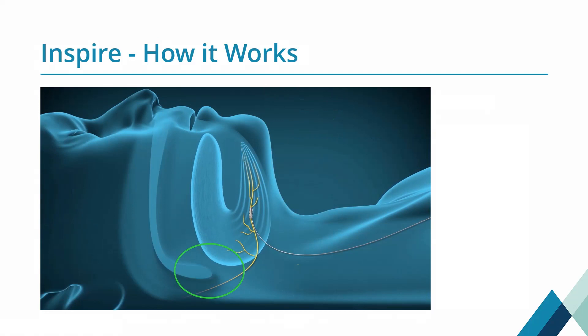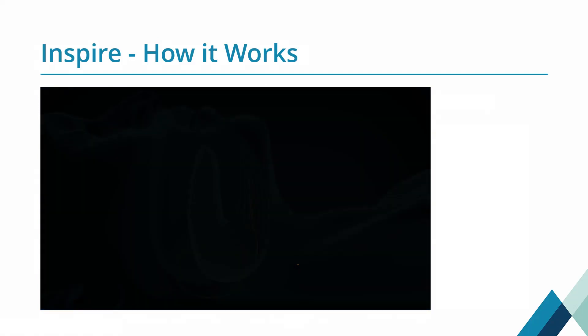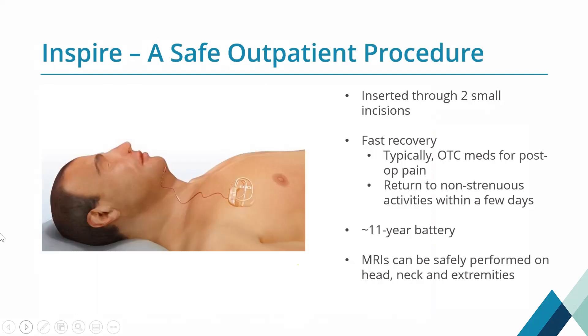The operation typically takes about 50 to 90 minutes, depending on anatomy more than anything else. This is an operation done as an outpatient procedure — done through two incisions: one to place the pacemaker-type device on the right side of the chest, typically, and then also a little probe that goes between the ribs — between the second and third rib — to sense when the respiratory muscles are moving.